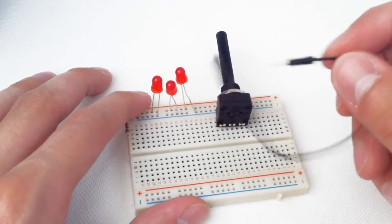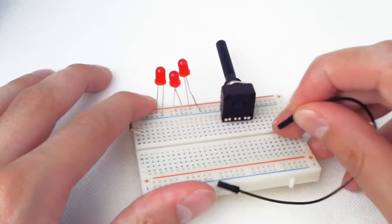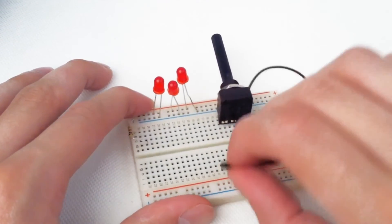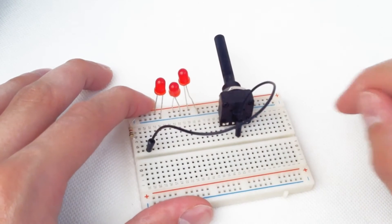And we have our jumper wire. We are going to connect the second leg. Make sure it goes in the right hole. Connect our fixed resistor to the middle terminal of the potentiometer.